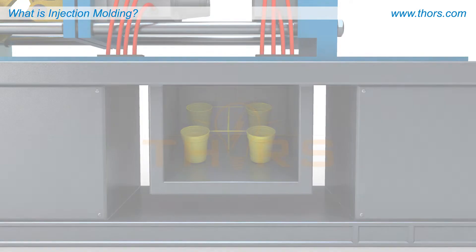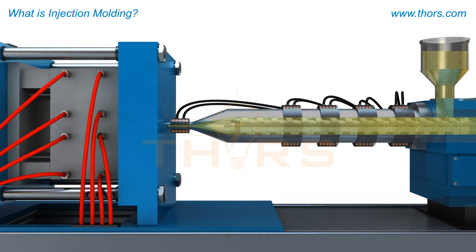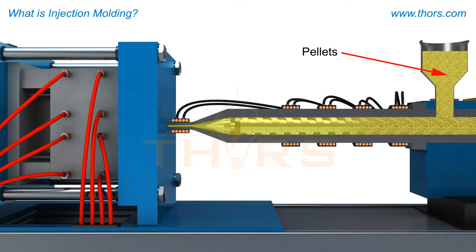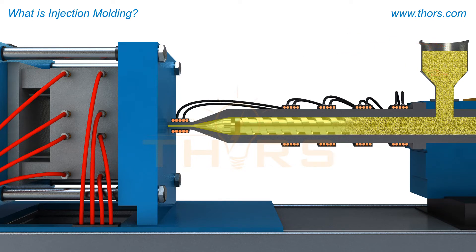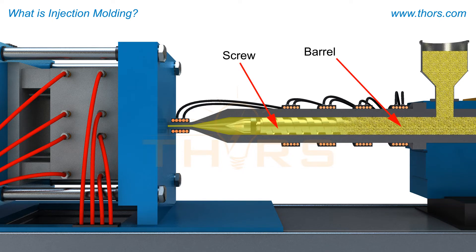To begin this process cycle, cylindrical cuts of plastic material called pellets are fed into an injection molding machine through a hopper. The material then feeds into the barrel of the injection molding machine where an injection screw rotates, conveying the material down the barrel.